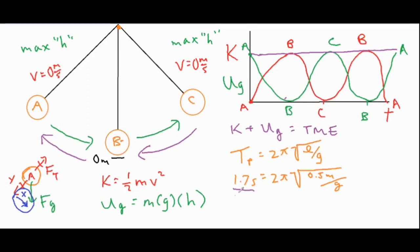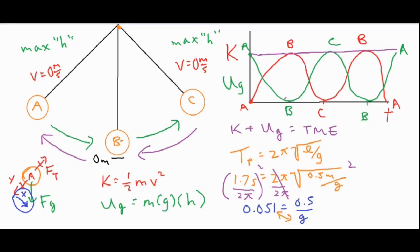We divide each side by 2π to cancel it on the right, then square both sides to eliminate the square root, leaving us with 0.051 equals 0.5 over g. Cross-multiplying gives g equals 0.5 divided by 0.051, which comes out to 9.80 meters per second squared. So by timing the period of the pendulum and measuring the string length, you can solve for g, the string length, or the period using a little algebra to rearrange the variables.